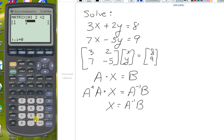We're going to enter our coefficients: 3, 2, we enter across the rows, 7, and negative 5.